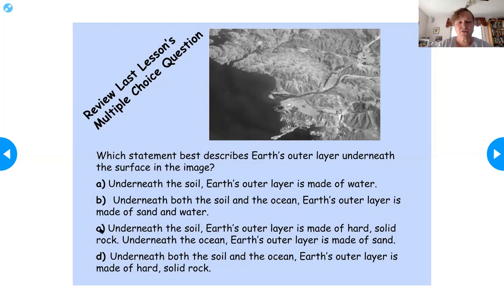And so let's just check. So so far, none of them make sense. Underneath both the soil and the ocean earth's outer layer is made of hard solid rock. That is the correct answer.